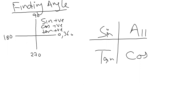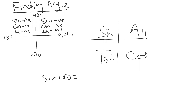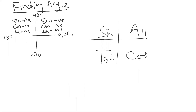In the second quadrant, sine is positive, but cosine is negative and tangent is negative. That is why I write sine positive here. For example, take 100 degrees — if you type sin 100 in the calculator it gives a positive answer, but cos 100 gives a negative answer. Please check it and you will be confident.